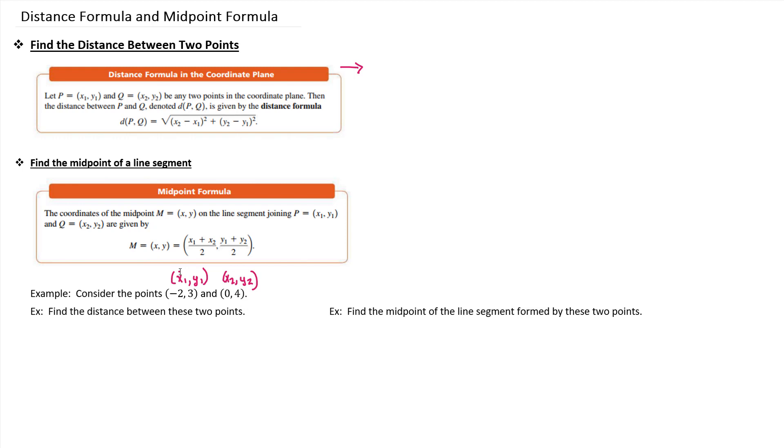So what I would do is I would start off by writing kind of the skeleton of that formula, which is the square root. And then you have a quantity squared, and it's a quantity where you're taking the difference between the x values. And then you're adding that quantity to another quantity where you're taking the difference between the y values and then squaring. So that's the skeleton of the formula.